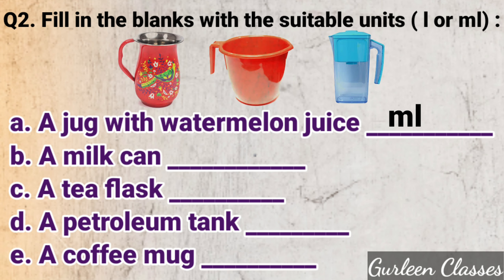Part B: a milk can — it will be liter. Part C: a tea flask — it will be liter. Part D: a petroleum tank — as it is a bigger quantity, it will be liter. Part E: a coffee mug — as it is a smaller quantity, it will be milliliter.